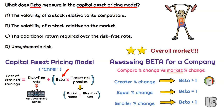That helps us understand the risk profile when assessing the required rate of return or the cost of retained earnings. Overall, it's focused on what does the beta mean here — and that is the volatility of a stock relative to the market. So that's going to be the correct answer.